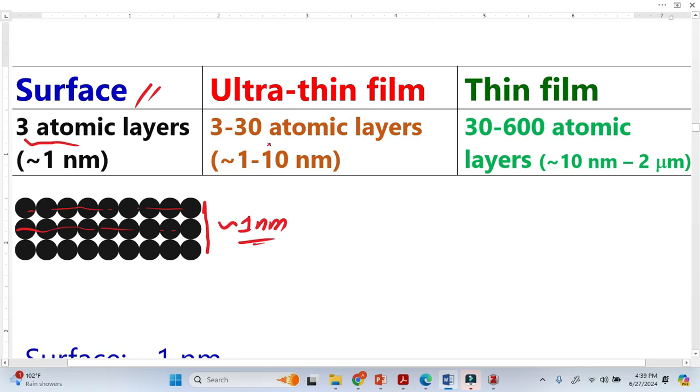The ultra-thin film is up to 30 atomic layers. This means ultra-thin film is thicker than the surface. And thin film is more thicker than the surface.